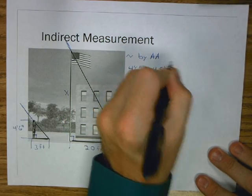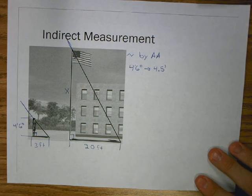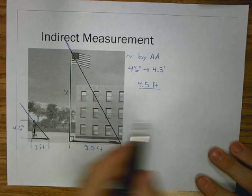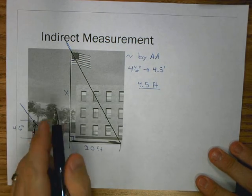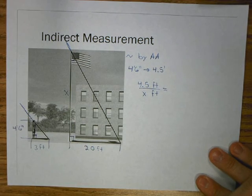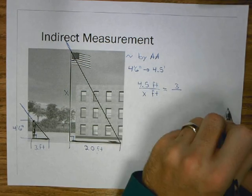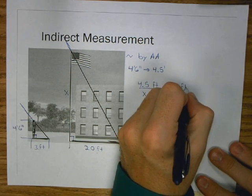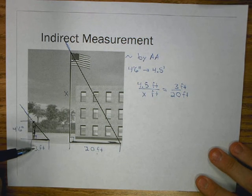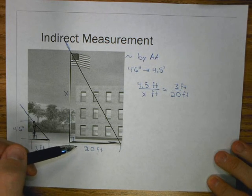So I have 4 feet 6 inches. Now, 4 feet 6 inches I want to write as a decimal. 4 feet 6 inches is 4 and a half feet. It's not 4.6. It's 4 and a half. There's 6 inches in a foot. So 4.5 feet. So I'm going to say 4.5 feet, the height of the person, is to the height of the flagpole, x. That is equal to the shadow of the person to the shadow of the flagpole. So 3 to 20.